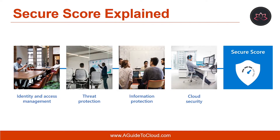Secure Score helps organizations to report on the current state of their security posture, improve their security posture by providing discoverability, visibility, guidance, and control, and compare with benchmarks and establish key performance indicators as well. With Secure Score, organizations gain access to robust visualizations of metrics and trends, integration with other Microsoft products, score comparisons with similar organizations, and much more.